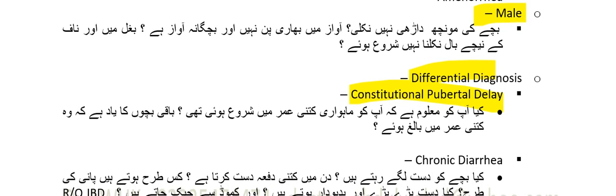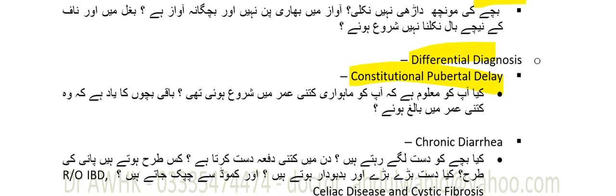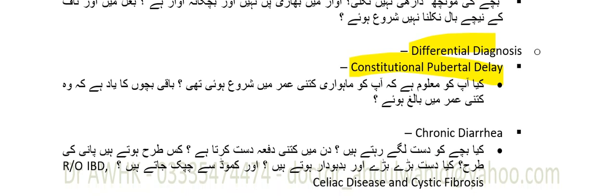Then you have to rule out chronic diseases, such as chronic diarrhea. You have to ask if the child has been feeling unwell, experiencing fatigue, or any other chronic illness symptoms that might be contributing to delayed puberty.